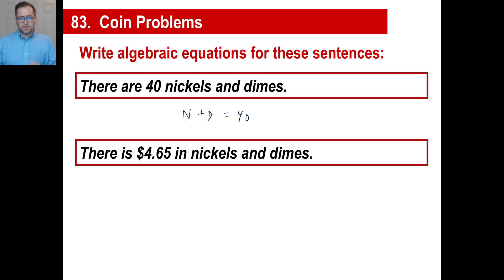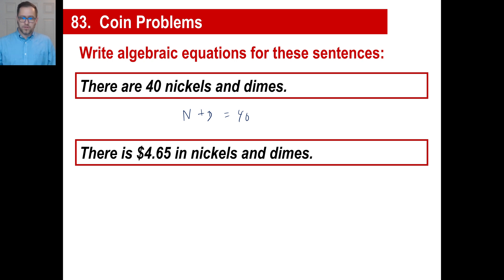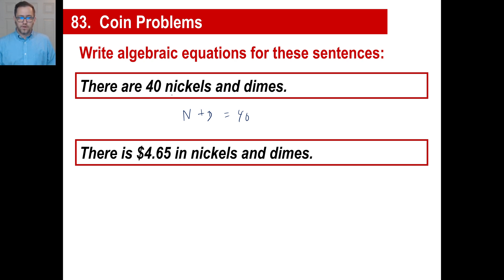There is $4.65 in nickels and dimes. Here's how you do it: if someone threw a big pile of nickels and dimes on a table, you'd pile them into two piles — a pile of nickels and a pile of dimes. For the nickels, you count the number of nickels and multiply by five cents. For the dimes, you add 10 times the number of dimes. They're telling us the total is 465 cents, so that's your equation: 5N plus 10D equals 465.